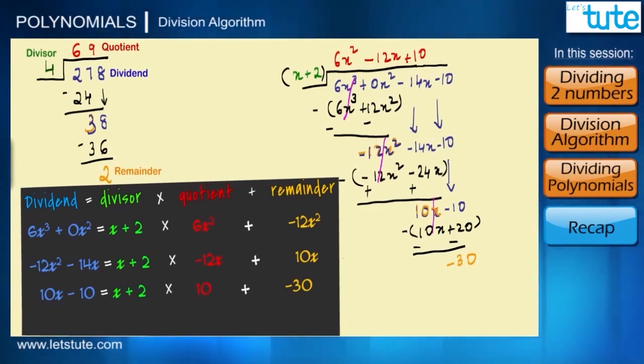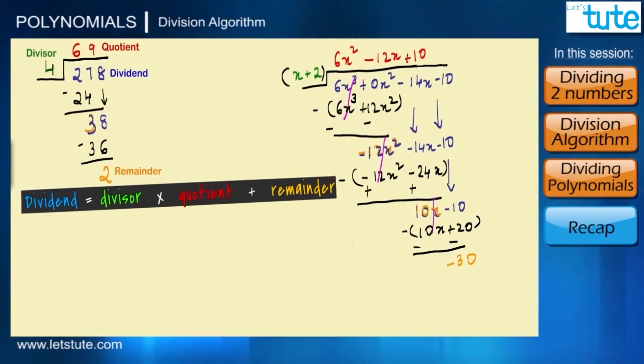Now to check whether our division is correct we can use the division algorithm method. So our division algorithm states dividend is equal to divisor into quotient plus remainder. So let us try to prove it. So on our right hand side we have (x + 2) into (6x² - 12x + 10) plus -30. So we have to open the brackets and we are going to multiply each of the terms of the first bracket with the terms from the second bracket. Let's start with x: x into 6x² is 6x³, x into -12x gives us -12x², x into 10 gives us 10x.